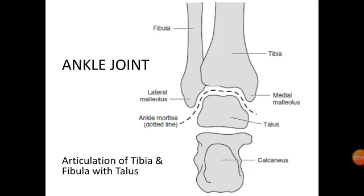The third border — the superior portion of the ankle joint — is formed by the inferior articular surface of the tibia and the superior margin of the talus. Please look at the lower part of the tibia, which is the inferior articular surface, and the superior margin of the talus.